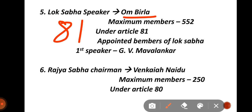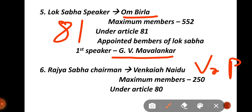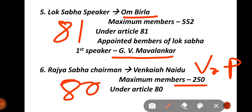The Vice President is also the Chairman of the Rajya Sabha. The Rajya Sabha has a maximum of 250 members — this is important to remember.